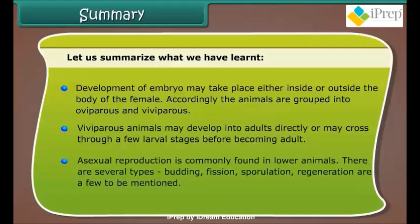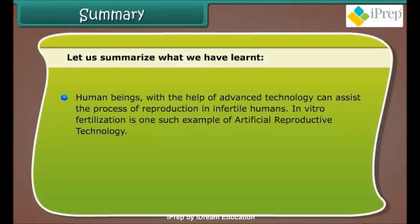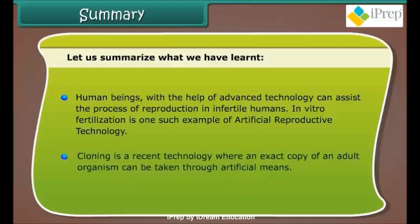Asexual reproduction is commonly found in lower animals, with several types including budding, fission, sporulation, and regeneration. Human beings, with the help of advanced technology, can assist the process of reproduction in infertile humans. In vitro fertilization is one such example of artificial reproductive technology. Cloning is a recent technology where an exact copy of an adult organism can be produced through artificial means.